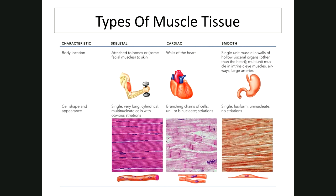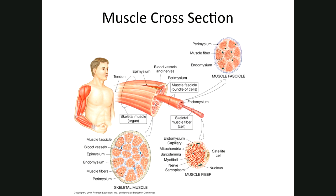Now let's look at fascia. The first type is superficial fascia, also called the subcutaneous layer, which covers the entire body. The outer layer is adipose and the inner layer is loose connective tissue, which has a lot of elastic and collagen fibers. It holds the skin to the underlying muscle and offers support to blood vessels and nerves.